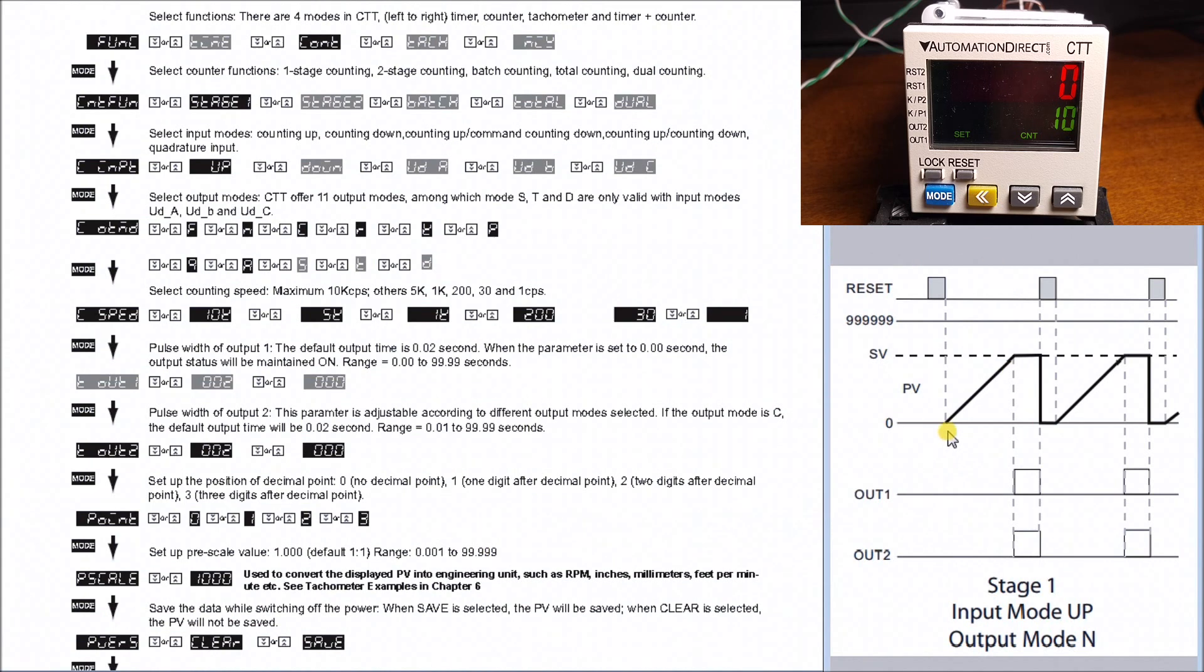Looking back at our output, what we're going to do is we'll have a reset and the present value will be put down to zero. The present value will start incrementing as soon as I have my input pulses going on. It will go up to the set value, and as soon as it hits the set value, it will turn on an output. That output will be maintained in output mode N until I hit the reset, then it will start all over again.